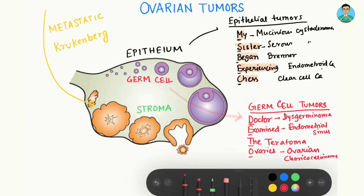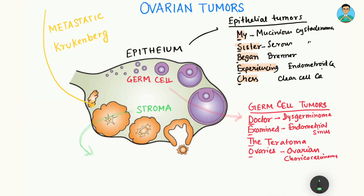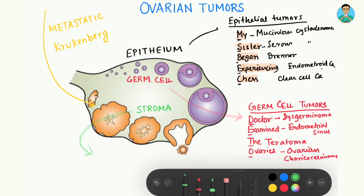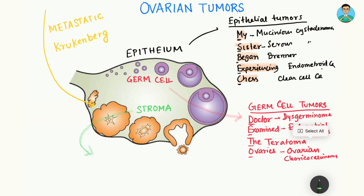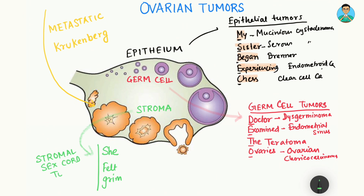Finally, we are left with the last option — the stromal tumors. I have a mnemonic for that as well: 'She Felt Grim,' and this is for the stromal sex cord tumors. S represents Sertoli cell tumors, or Leydig cell tumors — with Sertoli cell you can also remember Leydig cell tumors. F represents fibroma, or thecoma, or fibrothecoma. And G in Grim represents granulosa cell tumor.